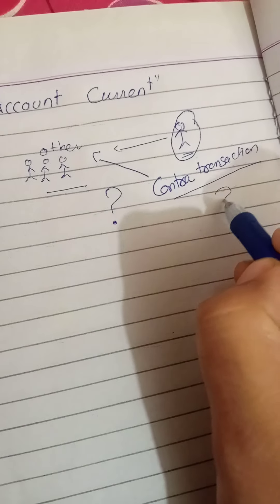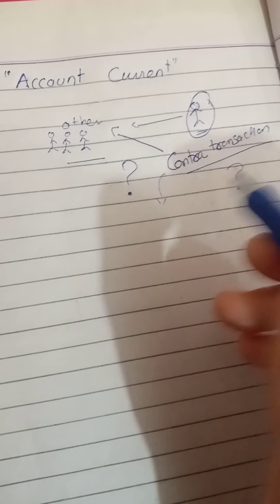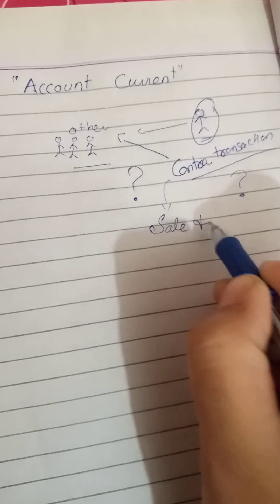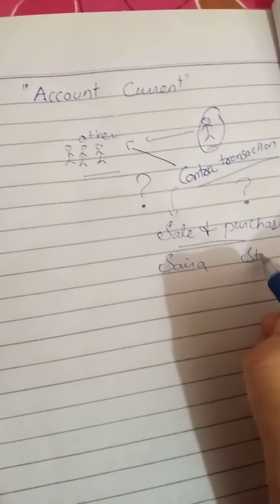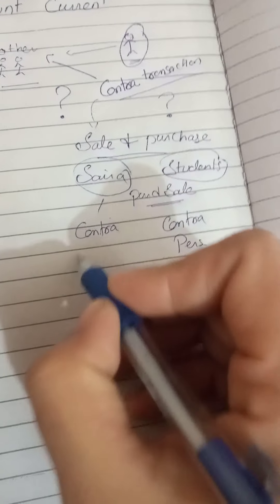We create account current because whenever a person does a contra transaction with another person, the need arises for an account current. Now the question is: what is meant by a contra transaction? Contra transactions mean you are doing sale and purchase simultaneously with a person. For example, I am Saira and you are a student — I am doing purchases and sales with you at the same time, so you become a contra person for me.